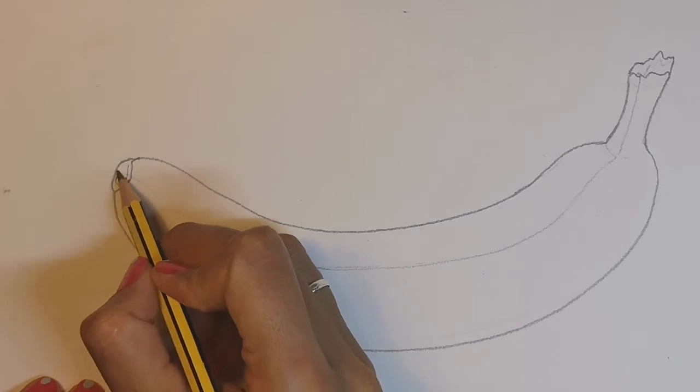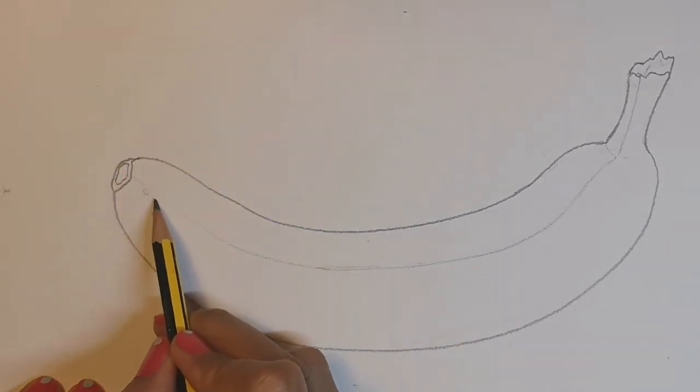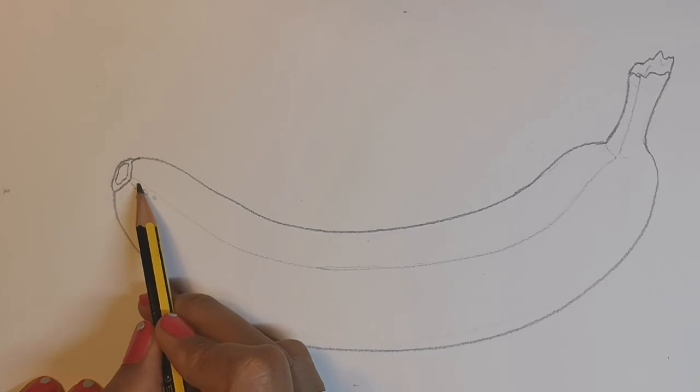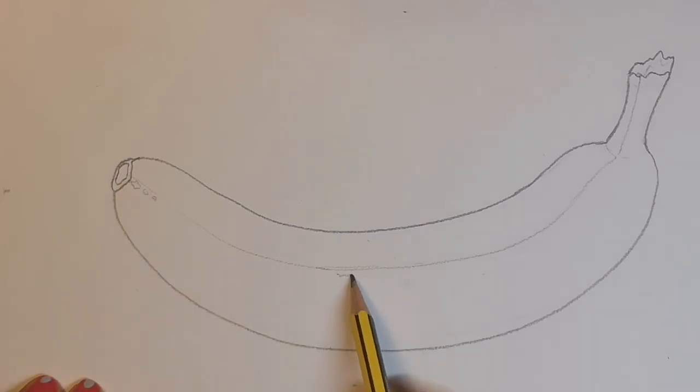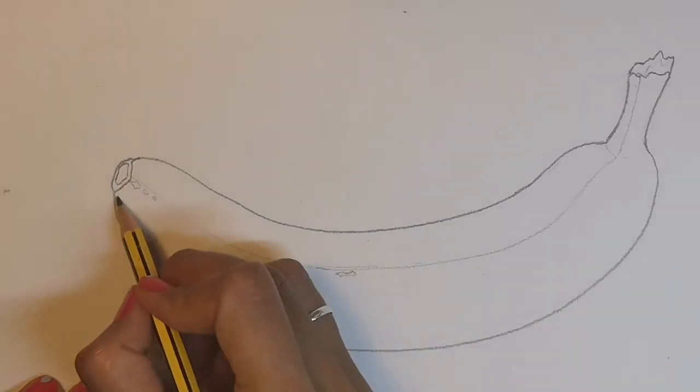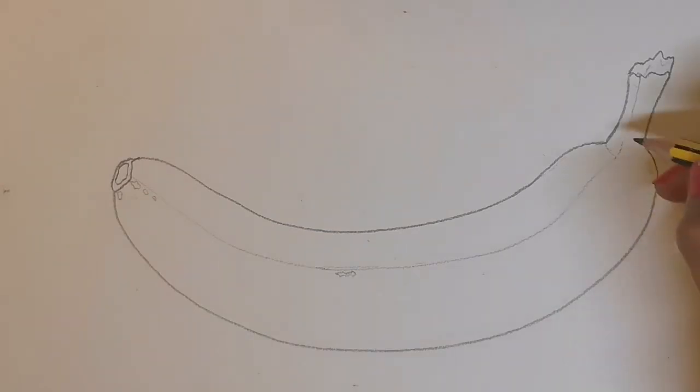If you take a look at a banana, you'll see that on the skin there are lots of little tiny dots and shapes and bruises. Draw these on lightly with your pencil. These will help to make your banana not only look more realistic but also interesting.